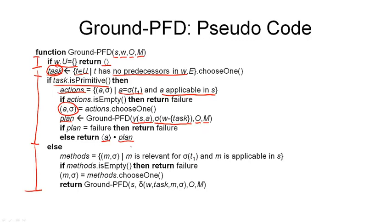And finally, we get to the part where our chosen task is non-primitive. And in that case, what we have to do is, again, compute the set of all methods that are relevant for our instantiated task and that are applicable in our given state s. And if this set of methods is empty, then again we can return failure. Otherwise, we have to choose one of those methods together with the substitution.